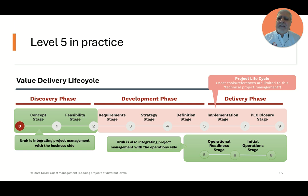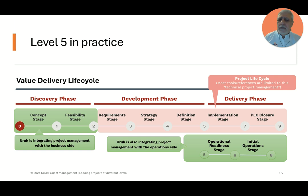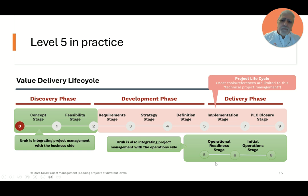A typical lifecycle view graphically: the pinkish area is a typical project lifecycle per level three — starting with a charter and ending with closure, with the product delivered at the end of an implementation stage. Then we add the green area: the discovery phase work early on, and the operational readiness work that comes in parallel later. That is a visual of level five in practice.